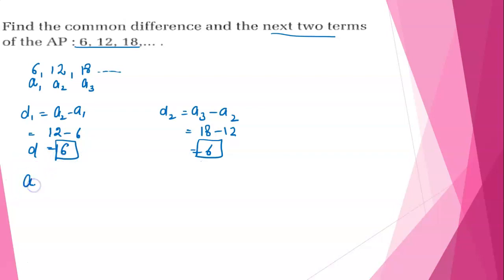We need to find the next two terms, that is A4 and A5. So A4 equals A3 plus D, which is 18 plus 6, equals 24. And A5, the fifth term, is A4 plus D, which is 24 plus 6, equals 30.